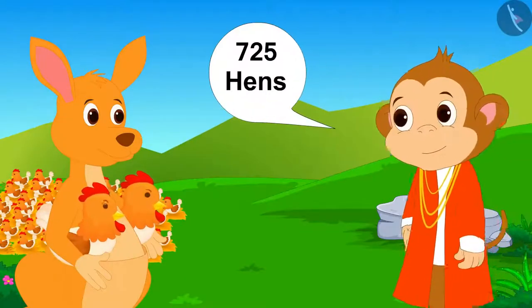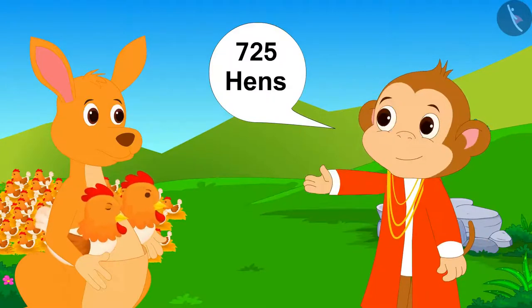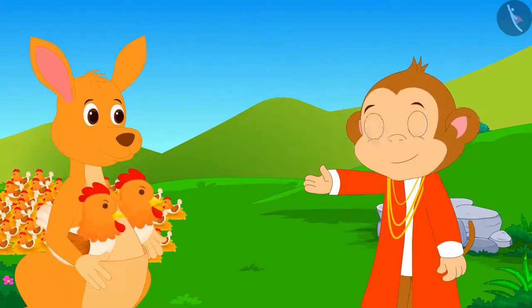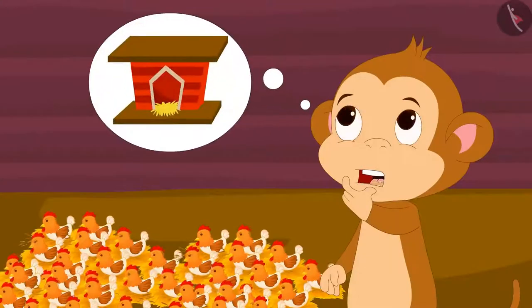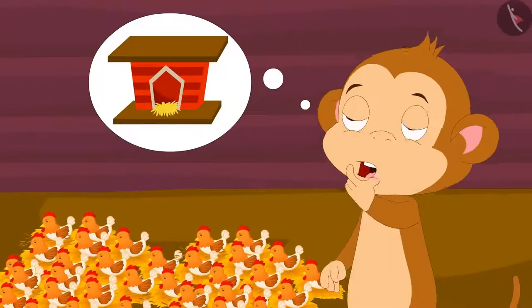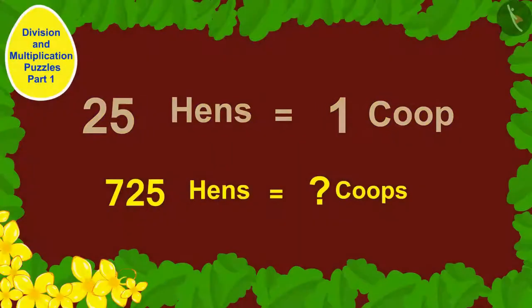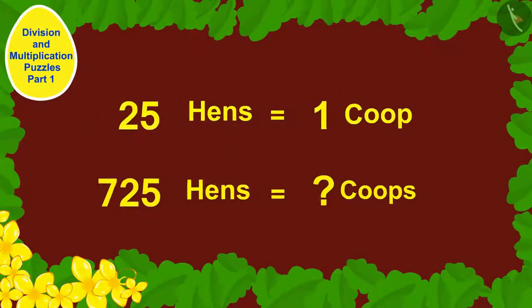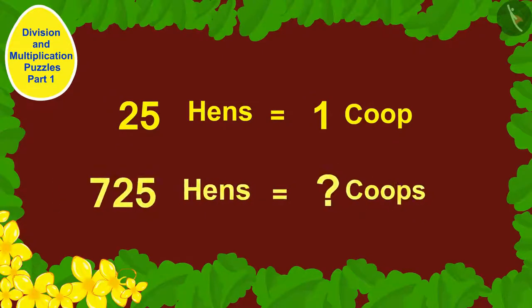Babban bought 725 hens. He thought: I have to build coops for these hens. If I keep 25 hens in each coop, how many coops will I have to build?